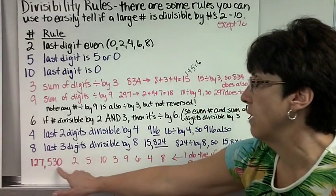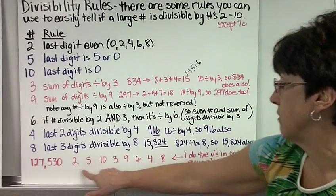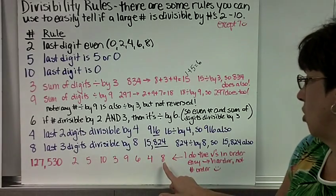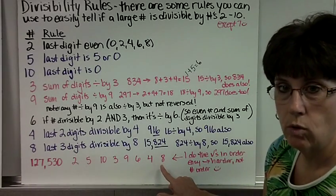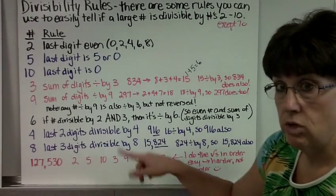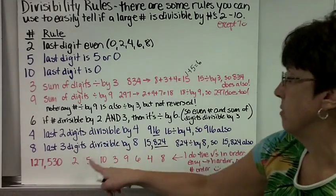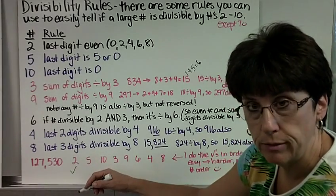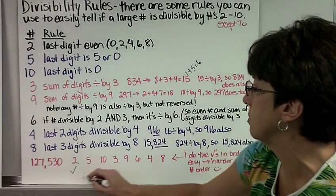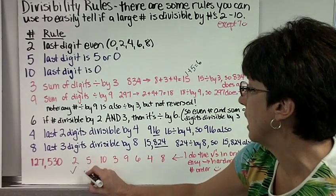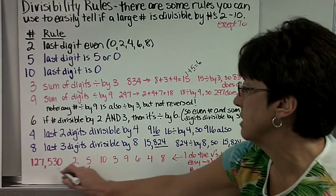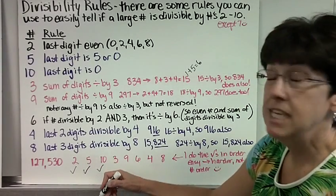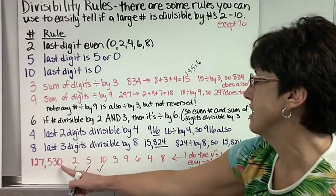So let's check this number, 127,530, and see if it's divisible by these numbers. Notice I do the numbers in order of easy to harder. I don't do them in order. So when I give you a worksheet, you can skip around. So is this number divisible by 2? Yes, because it's an even number. Is this number divisible by 5? Yes, because it ends in a 0 or a 5. Is this number divisible by 10? Yes, because it ends in a 0.